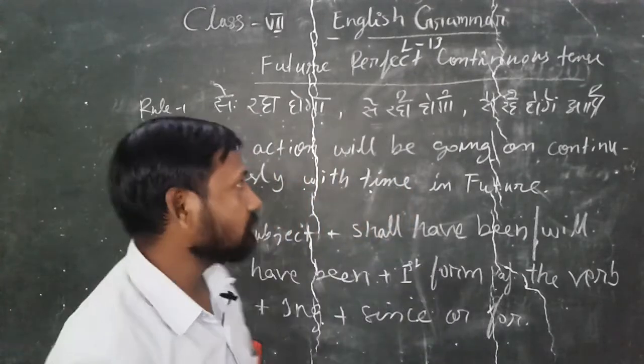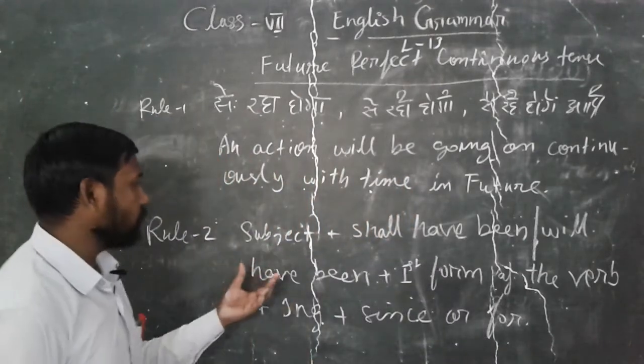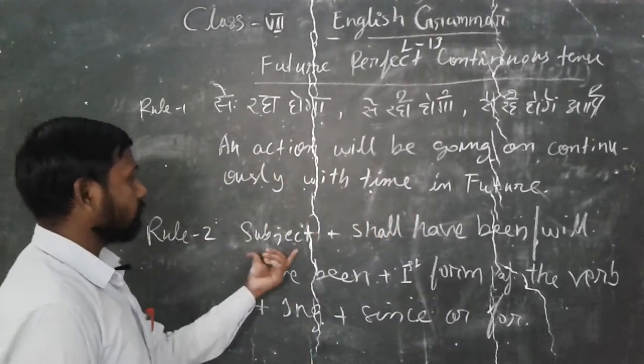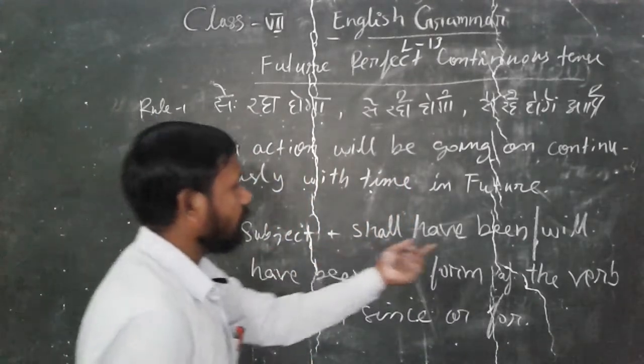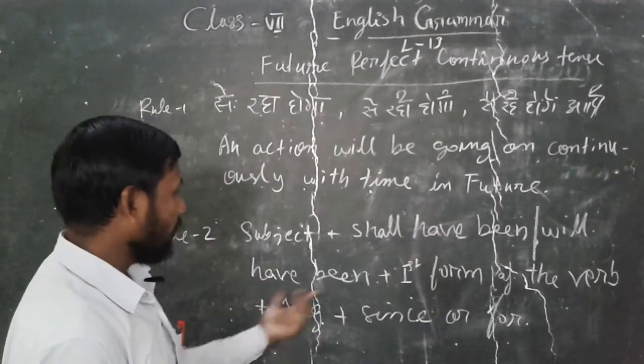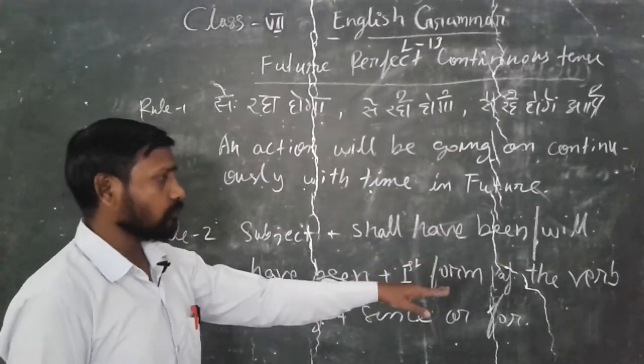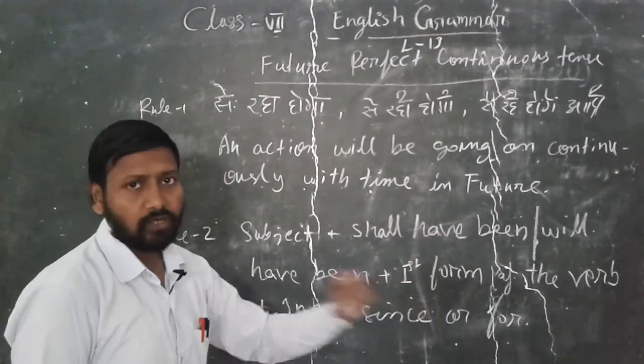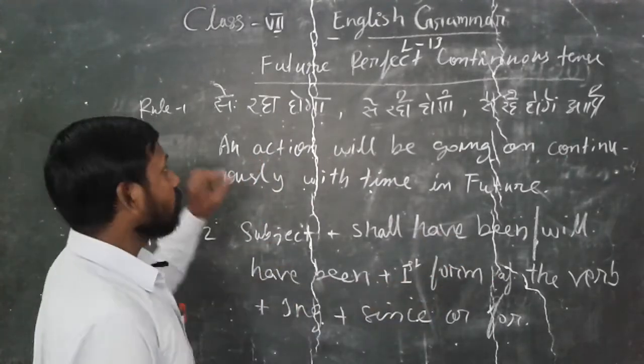So in this tense, we will use: Subject + shall have been / will have been + verb+ing + since/for. The action will be going on continuously with time.